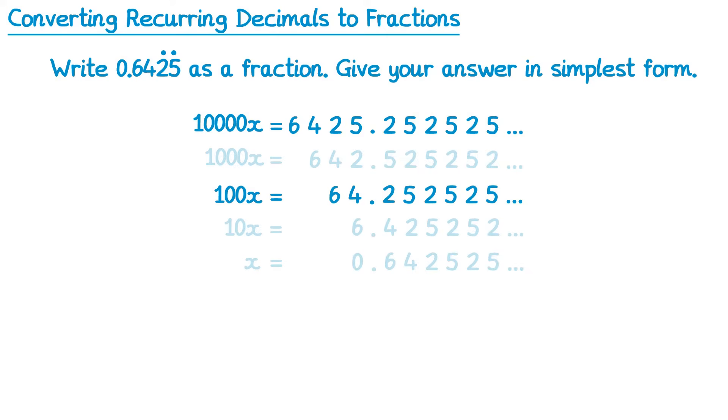We'll put everything else into the background and do 10,000x take away 100x. On the left, we get 9,900x, then an equal sign. Now you have to be careful with this next bit. We've got 6425 take away 64. If you need to, I'd advise just writing this somewhere separately and making sure you subtract correctly. This would give 6,361. And then of course, all of the numbers after the decimal point will just give us zeros. So we get 9,900x equals 6,361. We're going to need to divide by 9,900 to get x equals 6,361 over 9,900. And fortunately, this one doesn't simplify.